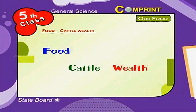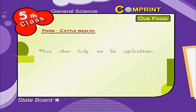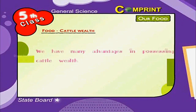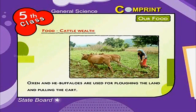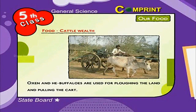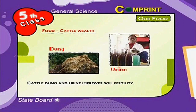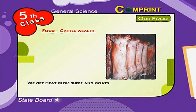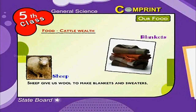Food and cattle wealth. The animals which give us food are called cattle wealth. They also help us in agriculture. Cattle are the backbone of agriculture. Oxen and buffaloes are used for ploughing the land and pulling carts. Cows and buffaloes give us milk. Cattle dung and urine improve soil fertility. We get meat from sheep and goats.